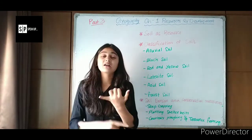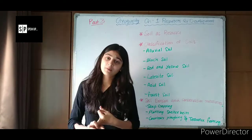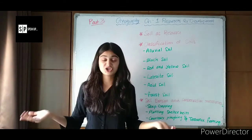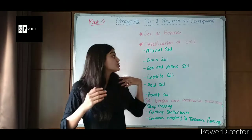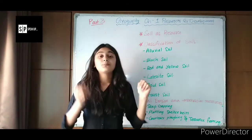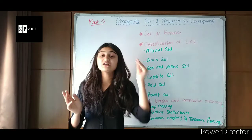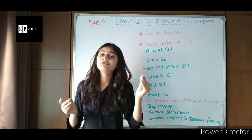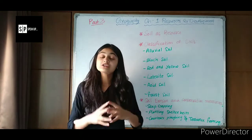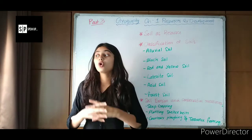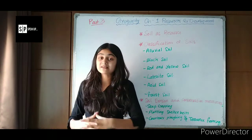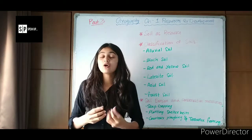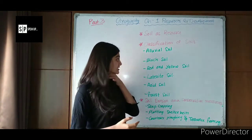Alluvial soil can be seen near the Ganga river bank, the Indus river bank, and also near the Krishna and Kaveri rivers. Then comes black soil. Black soil has a black texture and is a little dry, but it holds a lot of moisture and we can grow crops such as paddy over there.